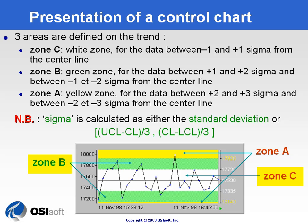The last zone is Zone A — the yellow zone — where data falls between plus two and plus three sigma, or minus two and minus three sigma from the center line. There is also an unknown zone where the data is out of the limits, which is not shown on this chart but does exist.